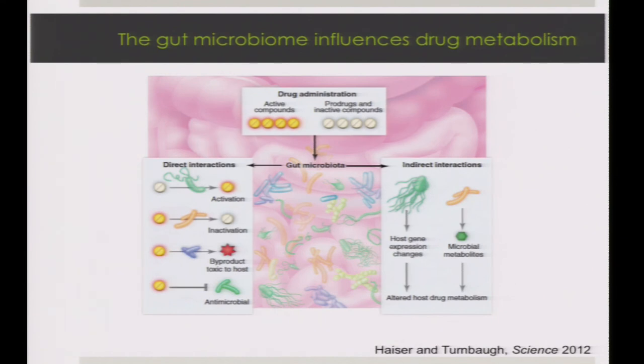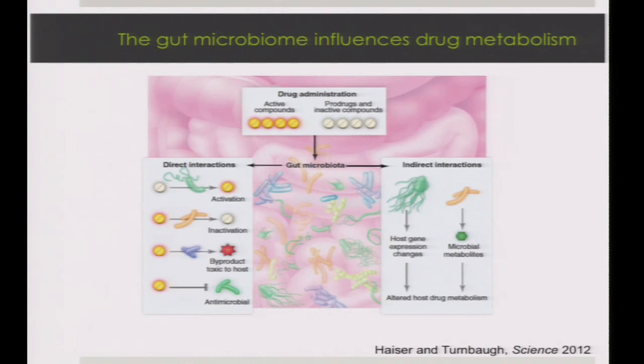In the simplest case, an orally administered compound going through the gastrointestinal tract can be directly modified by gut microbes — in the case of prodrugs that are activated, compounds that are inactivated, converted to toxic byproducts, and antibiotics intended to affect pathogens that can have unintended consequences for the standard residents of the gut microbiota. In addition, there are interesting indirect interactions where microbial colonization can result in metabolites that enter circulation and interfere with drug metabolism throughout the body, as well as effects on host gene expression.